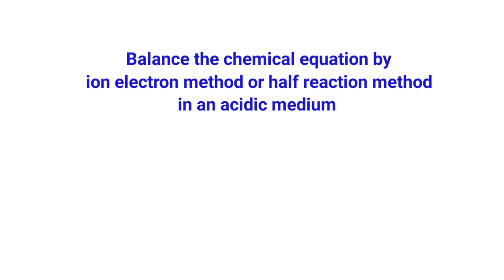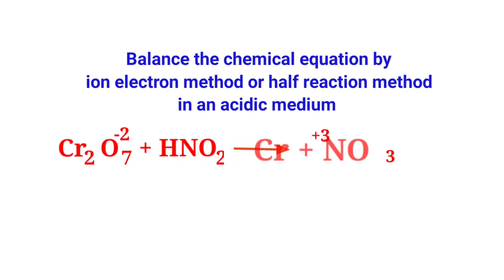Balance the chemical equation by the ion electron method, or half reaction method, in an acidic medium. The equation is: dichromate ion plus nitrous acid gives chromium 3 ion plus nitrate ion.